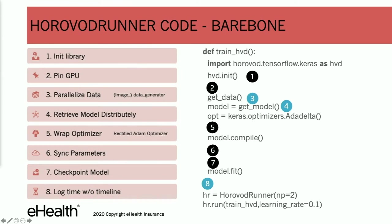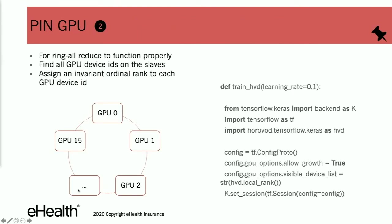We will explain three additional pinpoints: parallelize data, retrieve model, and log time. For ring-allreduce to function, we need to ensure that every worker is using one particular GPU instead of a random GPU. We need to list all GPUs on our workers and assign an invariant rank to each GPU.